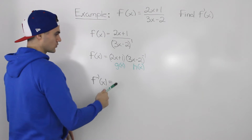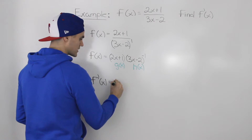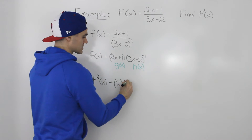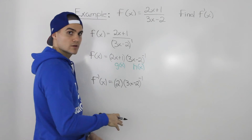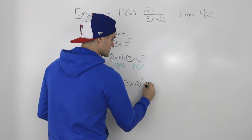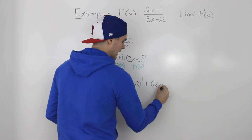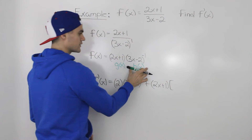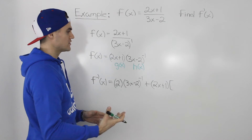Because f of x is composed of two functions multiplied by each other, to find its derivative we can just apply the product rule. So with the product rule, we take the derivative of the first function — the derivative of 2x plus 1 is just 2 — multiplied by the second function, 3x minus 2 to the power of negative 1, rewritten as it is. Plus the first function, 2x plus 1, rewritten as it is. And now to find the derivative of the second function, we're going to have to apply the power of a function rule, because it's a function to the power of a number.